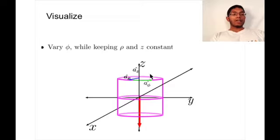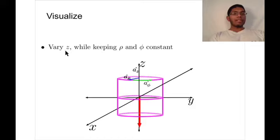So changing φ will not change the electric field. If we vary z and keep ρ and φ constant, the electric field will be different because this is no longer like our infinite line of charge.